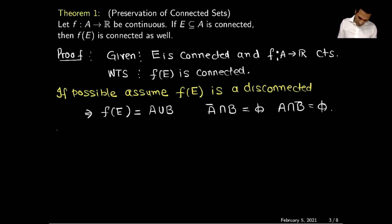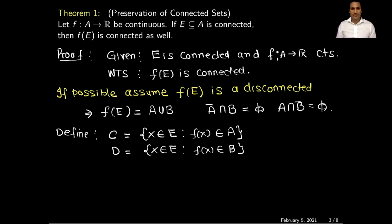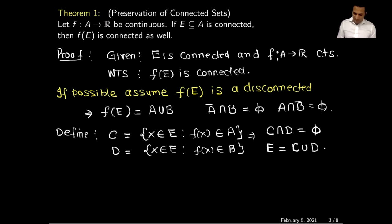Now I define two new sets. I define C as those elements from E whose image under f is in A, and D as those elements from E whose image is in B. By the definition of C and D and the fact that f is a function, C will not intersect D, and E equals C union D.